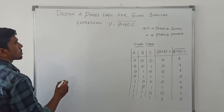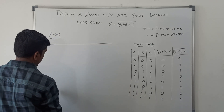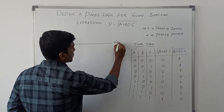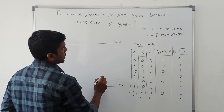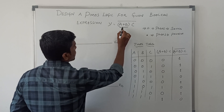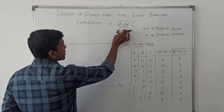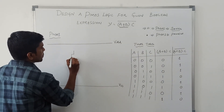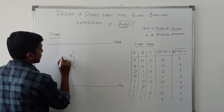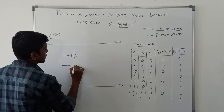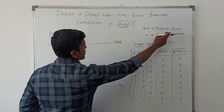Now I am going to draw the PMOS logic for the given boolean expression. First I draw two lines — one line represents VDD and another line represents VSS. Between these two lines we fix the transistors. Taking the term A plus B from the expression: the operator is plus, meaning the PMOS transistors connect in series. This sum term has two variables, and each variable consists of one transistor. Transistor T1 has input A and transistor T2 has input B. Since the operator is plus, the PMOS transistors connect in series.